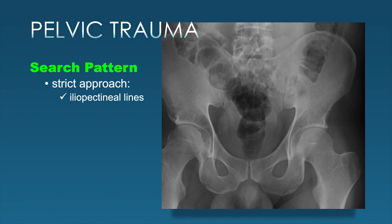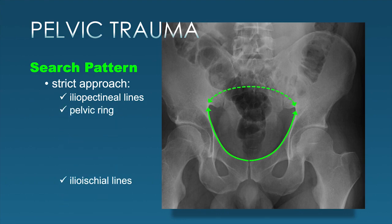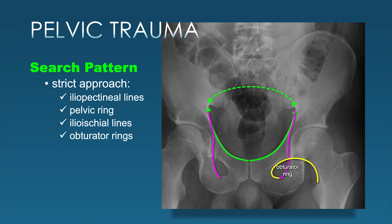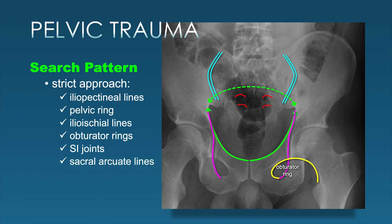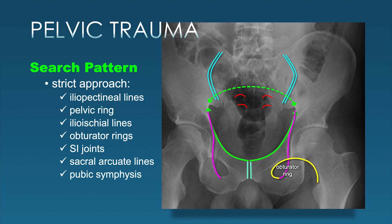The search pattern on the AP view should have a strict approach. We look at the iliopectineal lines bilaterally, follow them posteriorly to see if we have an intact ring for the bony pelvis. Follow the ilioischial lines into the obturator foramen and loop around the obturator ring completely into Shenton's line—we want to see nice smooth curves all the way through without disruption. We can see the anterior SI joints more prominently than the posterior SI joints on the AP view. Try to look through the bowel gas to assess the sacral arcuate lines and look at the pubic symphysis as well.